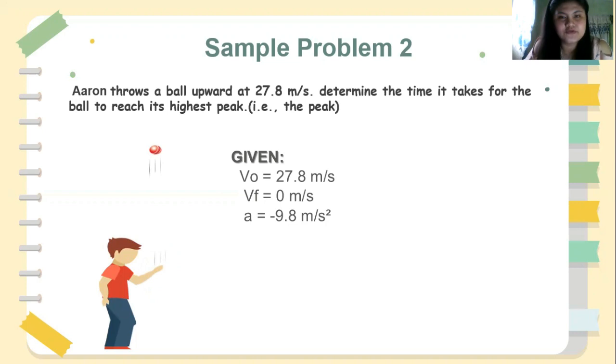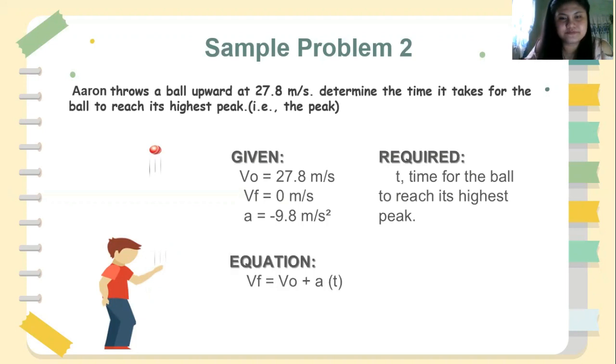Then, we need to find the unknown values or the required. The required is the time it takes for the ball to reach its highest peak. Next thing we need to find is the equation that suits for our required value. We have final velocity is equal to initial velocity plus acceleration times time.